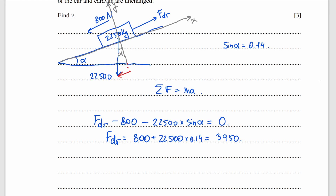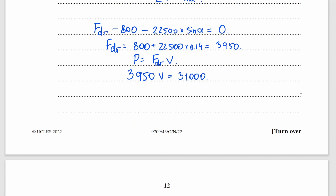Using power equals driving force times velocity: 3950 times velocity equals 31,000. From here the velocity is 7.85 metres per second.